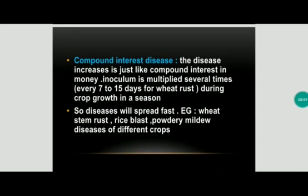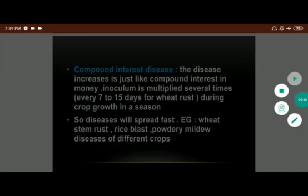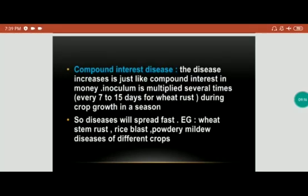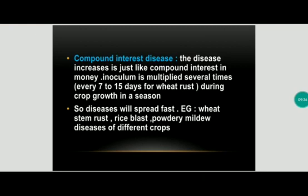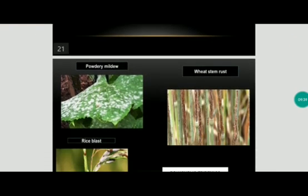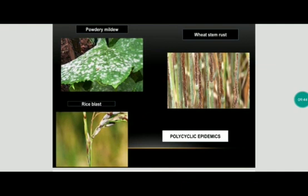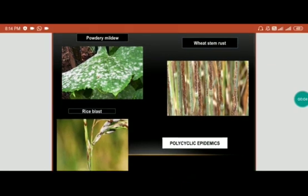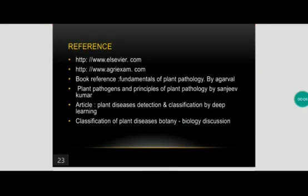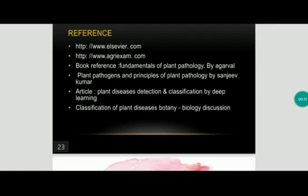In compound interest disease, the disease increases just like compound interest — it multiplies several times and we cannot predict the amount. It occurs and multiplies several times during crop growth in a particular season. For example, wheat rust may multiply every seven to fifteen days, spreading vastly throughout. Examples: wheat stem rust, rice blast, and powdery mildew. Pictures shown include powdery mildew, wheat stem rust, and rice blast. These are the reference books and articles from which information is taken. Thank you.